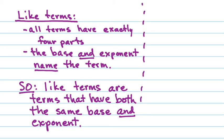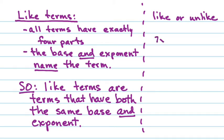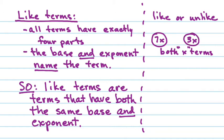Let's look at a few examples of terms. All I want you to do is tell me: are they like or unlike? If I have seven X's and three X's, are those like or unlike terms? They're like terms — they are both X terms. The number in front tells you how many of them you have. The base and the exponent tell you what kind they are. What if I have seven X to the second power and three X? Are those like terms or unlike terms?